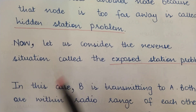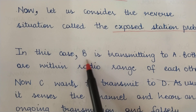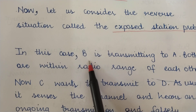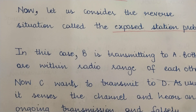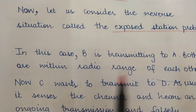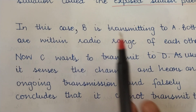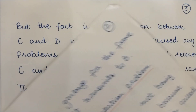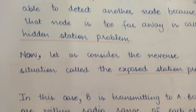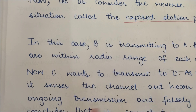Now let us consider the reverse situation called the exposed station problem. The scenario is the same: A and B are in the radio range of each other, B and C are in the radio range of each other, but A and C are not in each other's radio range. Now if B is transmitting to A, and C wants to transmit to D — we have four nodes A, B, C, and D. C wants to transmit to D because it is in the radio range of D. As usual, C senses the channel and hears an ongoing transmission.